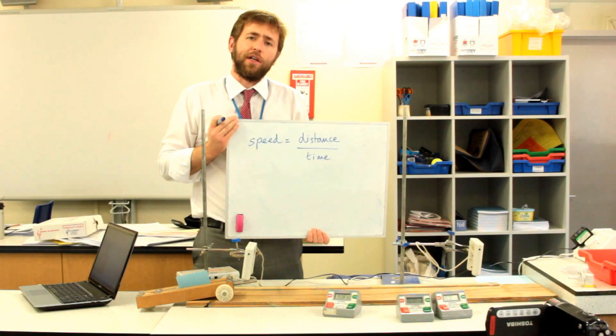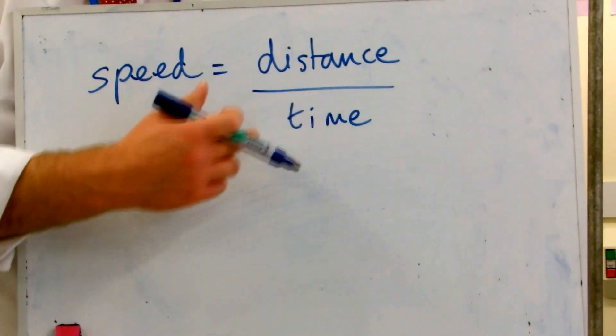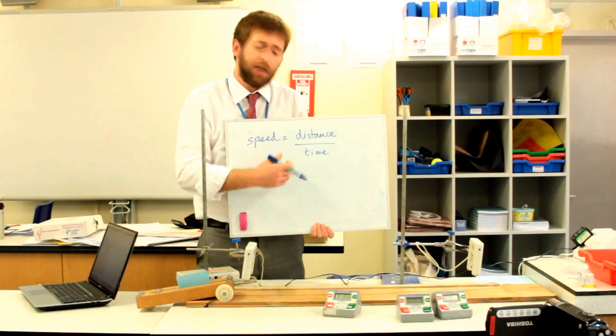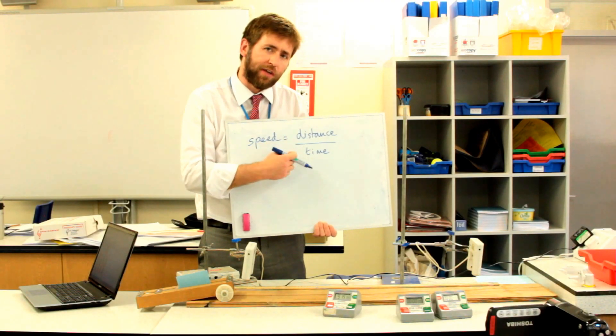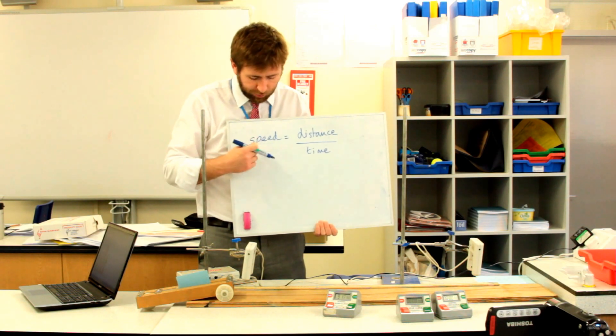We calculate speed using this equation. Speed is distance divided by time. These two are the quantities we have measured, and this one is the one we want to calculate.